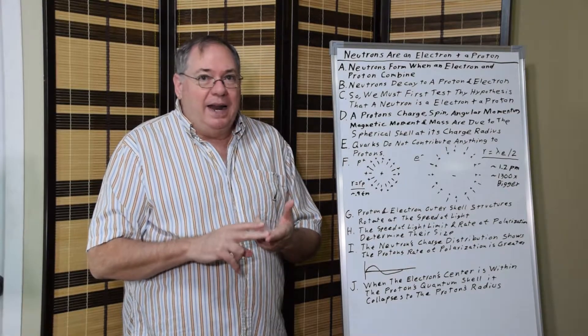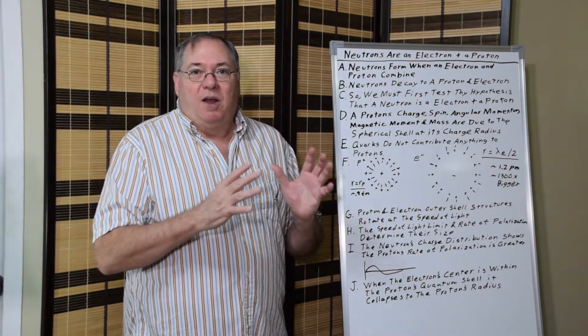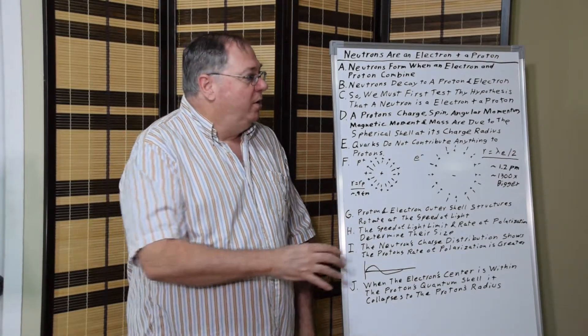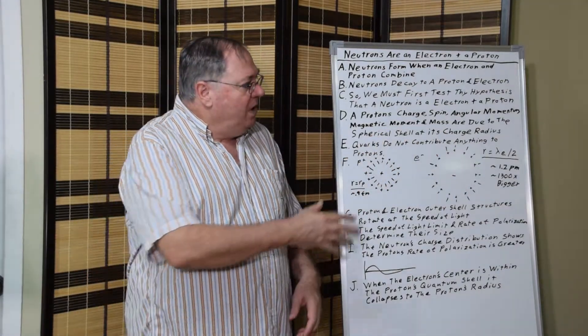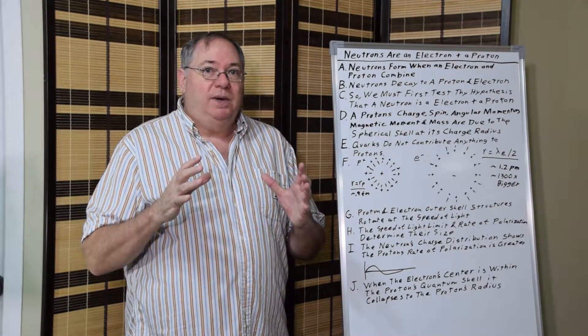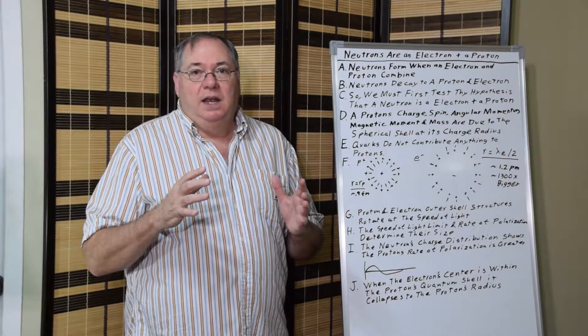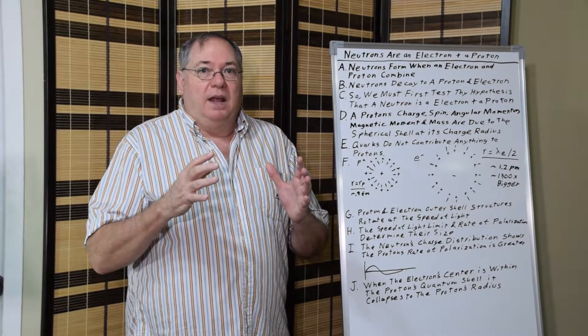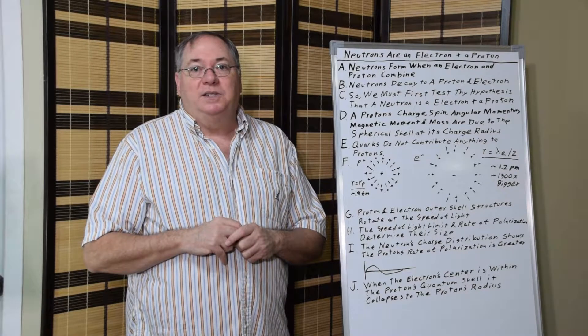The magnetic moment, the mass, the spin, all the properties of the electron emerge from something at the Compton radius. The scattering can only be due to a shell of quantum fluctuations at this Compton radius because the magnetic moment and mass emerge from that.